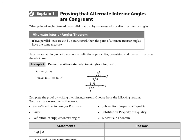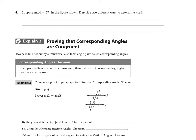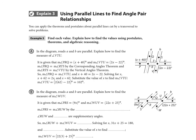Now let's jump ahead to page 179. Pages 176 through 178 walk through proof by proof what the parallel line relationships are, but I can summarize that quickly. When we have parallel lines and a transversal, certain angle pair relationships emerge.